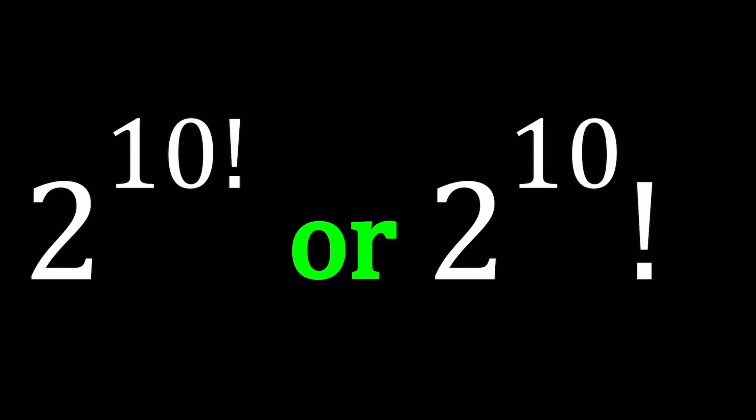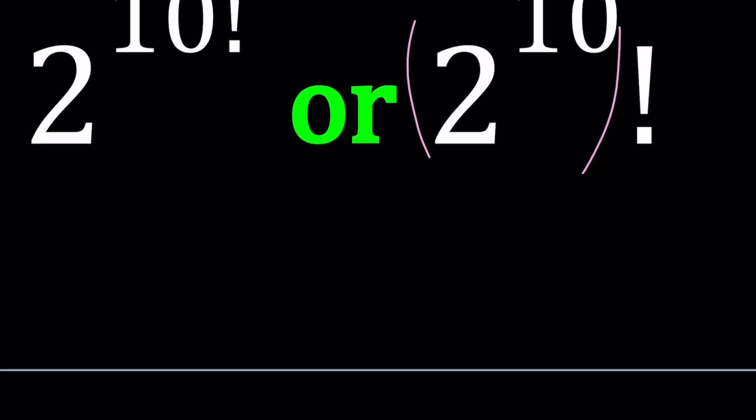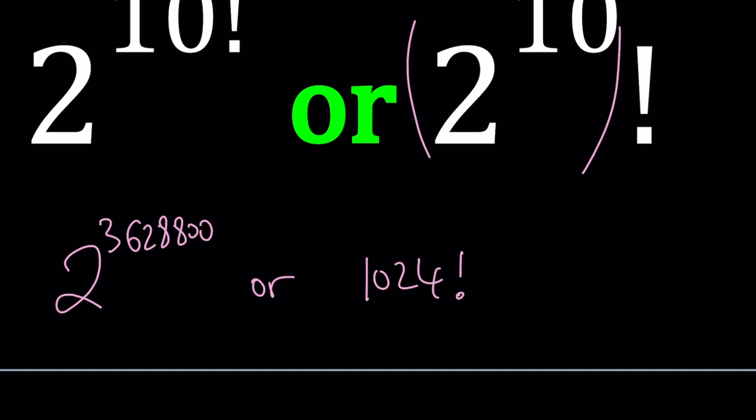Hello everyone. In this video, we're going to be comparing two numbers: 2 to the power 10 factorial, and 2 to the 10th factorial. We could put 2 to the 10 in parentheses to make it more clear that we factorial 2 to the 10th. We could look at this problem from a different perspective and just compare 2 to the power 3,628,800 and 1024 factorial, but that will be much harder. That's 10 factorial, and 2 to the 10th power is 1024, so the number on the right-hand side is basically 1024 factorial. How do we compare these two numbers? Let's go ahead and take a look.